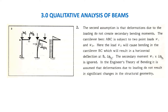Bending in the cantilever BC results in a horizontal deflection at B, that is delta_bh. This horizontal deflection at B is caused by load w2 — because of that load, BC is bending and point B moves horizontally. The secondary moment w1 multiplied by delta_bh is ignored, because in continuous theory of bending it is assumed that deformations due to loading do not result in significant changes in the structural geometry.